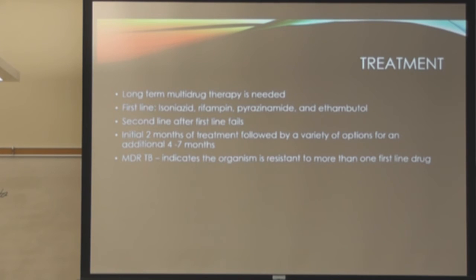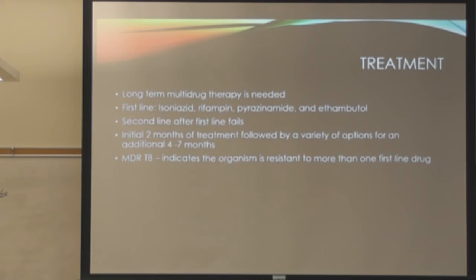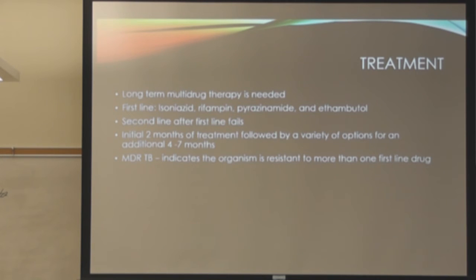Treatment is long-term multi-drug therapy — you're talking about months. There's a first-line treatment, and the second line is administered when the first line fails. You're looking at a two-month initial treatment, then an additional four to seven months. MDR-TB means multi-drug-resistant TB, indicating the organism is resistant to first-line drugs.